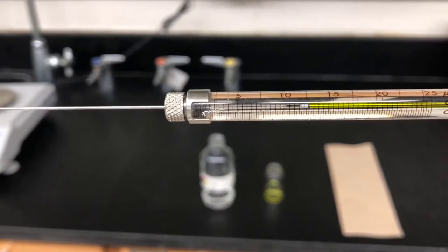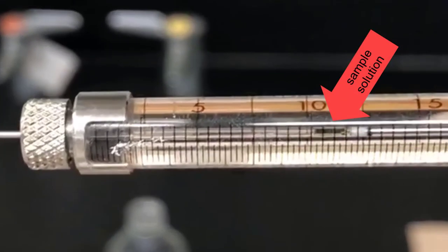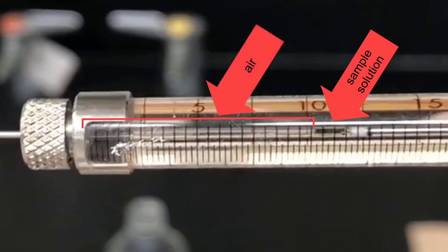The metal plunger is highlighted here in yellow and the white teflon tip is shown here with an arrow. The sample solution is located here and there's 1.5 microliters of it in the syringe. Finally, the syringe volume from 0 to 10 microliters is air. Now I'm ready to inject this sample into the GC.